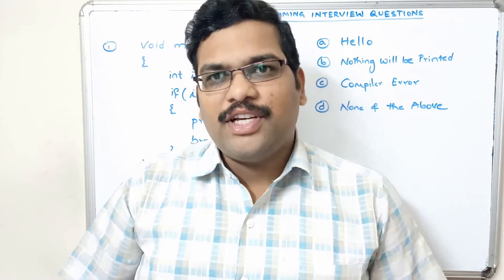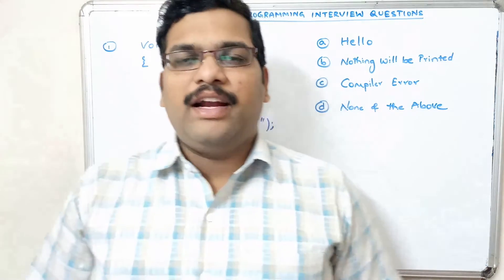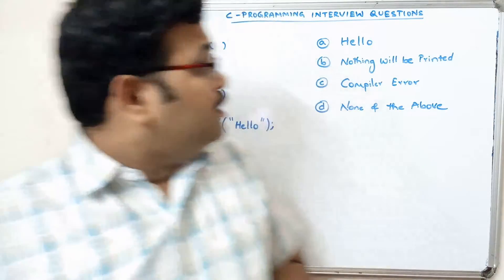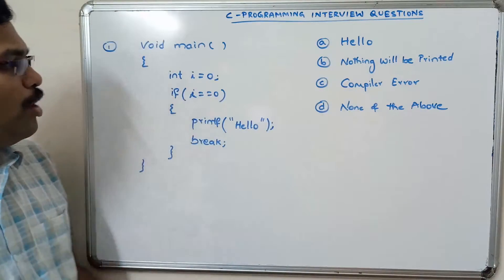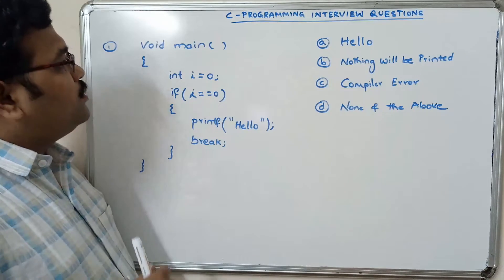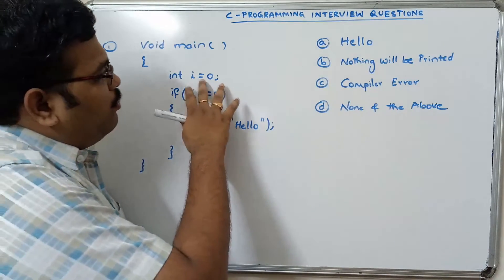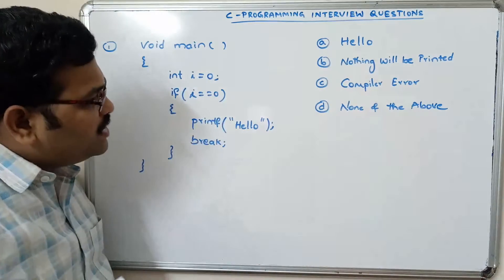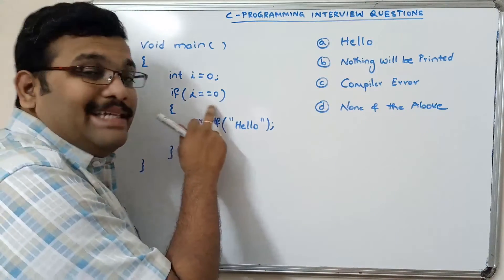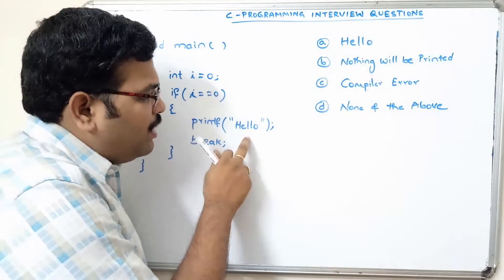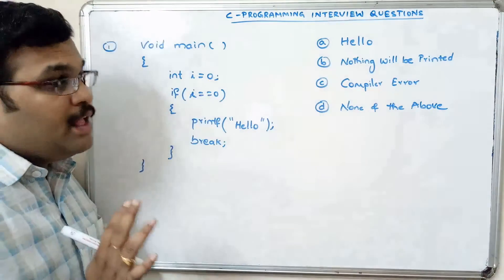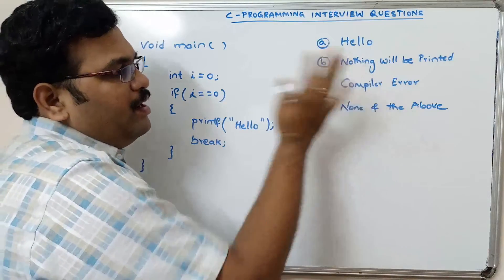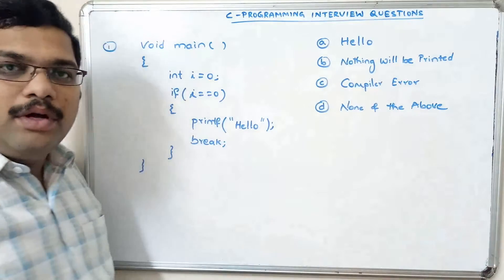Hello friends, welcome back to our channel. In today's session, let us see a few more C programming interview questions. The first one is a small logical program where one variable is declared and initialized to zero, and a condition is given: if i equals zero, printf hello, break. The options are: hello will be printed, nothing will be printed, compile error, or none of the above.